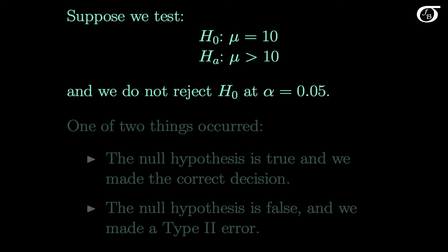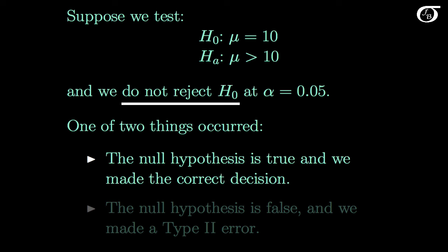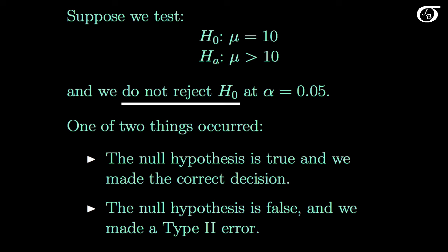But suppose instead that we carry out the same test and we do not reject the null hypothesis at an alpha level of 0.05. Here again one of two things occurred: the null hypothesis is true and we did not reject it, so we made the correct decision; or the null hypothesis is false and we did not reject it, so we made a type 2 error.